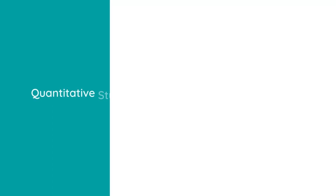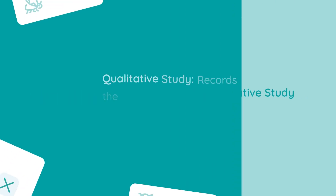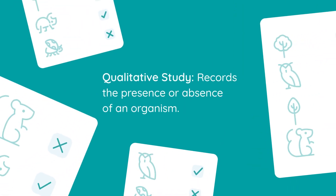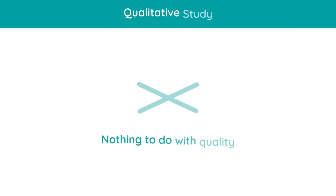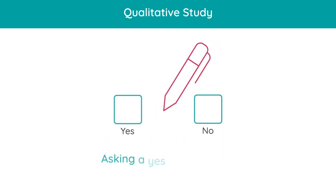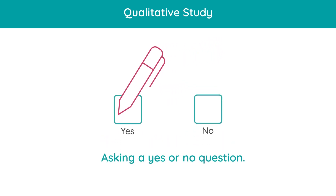In this video, we're going to focus on the difference between quantitative and qualitative studies. A qualitative study records the presence or absence of an organism. It's really important to say this has nothing to do with the quality of an organism. It's like asking a yes or no question — is the organism there or not?